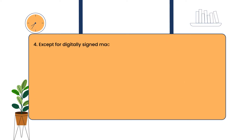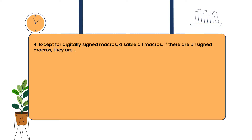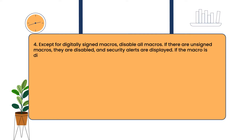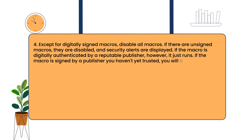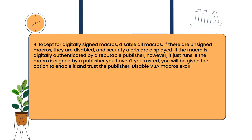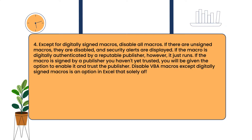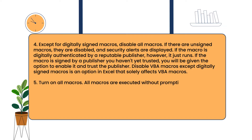Third, except for digitally signed macros, disable all macros. If there are unsigned macros, they are disabled and security alerts are disabled. If the macro is digitally authenticated by a reputable publisher, it just runs. If the macros are designed by a publisher you haven't yet trusted, you will be given the option to enable it and trust the publisher. 'Disable VBA macros except digitally signed macros' is an option in Excel that solely affects VBA macros.